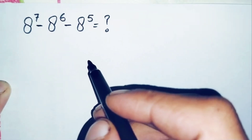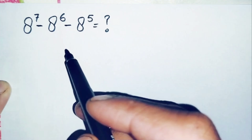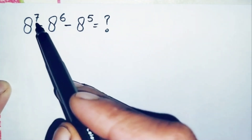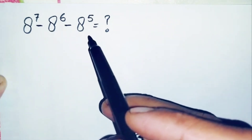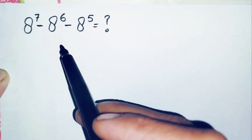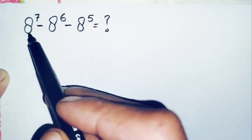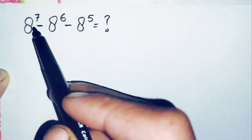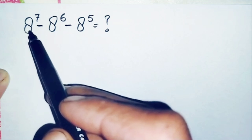Hello everyone, welcome back to Math Explorer. Today we evaluate this beautiful math problem: 8 raised to power 7 minus 8 raised to power 6 minus 8 raised to power 5. We can solve this using two different ways. The first is to directly multiply 8 seven times, but multiplying 8 seven times will be a little bit difficult.